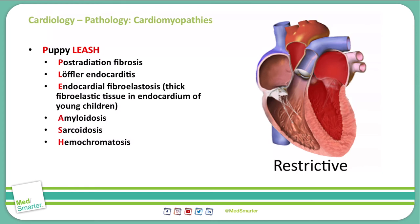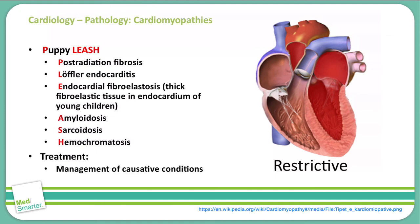Treatment of restrictive cardiomyopathy is difficult because there is really no treatment for the actual restriction itself — we just treat the causative conditions. So if a patient has amyloidosis, sarcoidosis, or hemochromatosis, we treat those conditions the way they need to be treated in order to help reduce the restrictive effects on the heart.